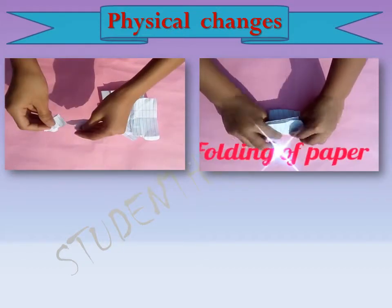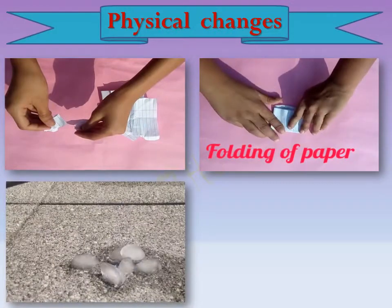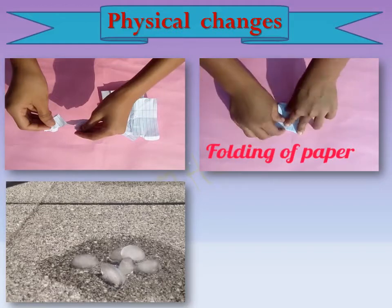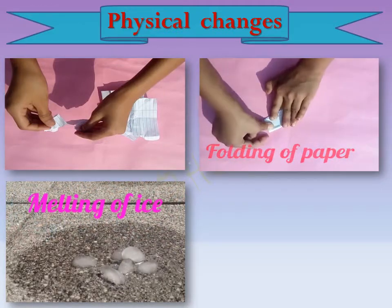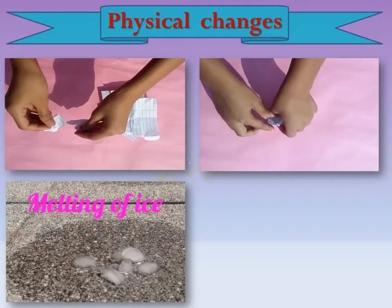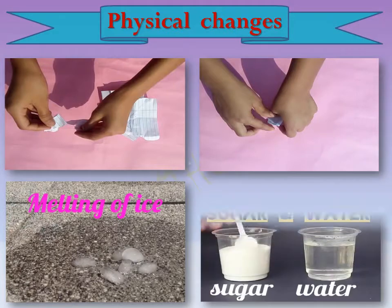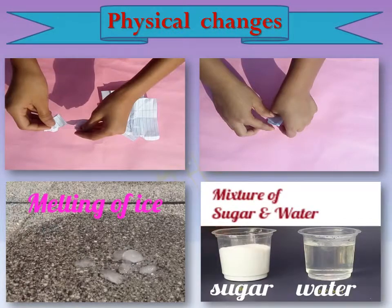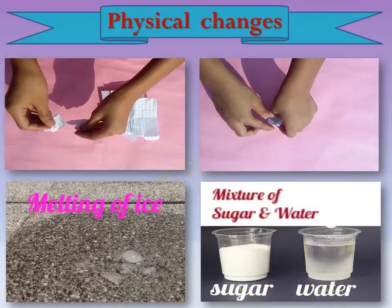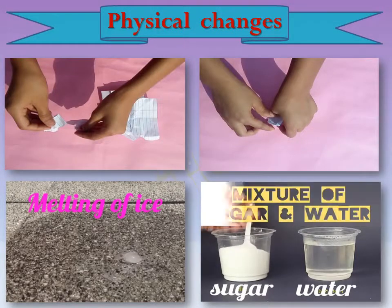Third example: melting of ice. The nature of both ice and water is the same, and both have the same chemical formula. Fourth example: sugar dissolved in water. Many such changes can be seen around us. After a physical change, the substance can again come back to its old state.